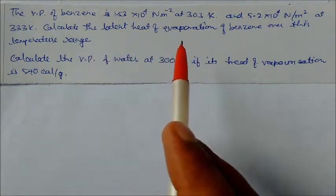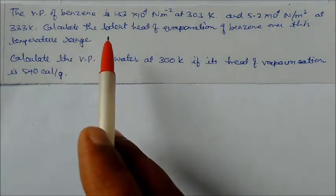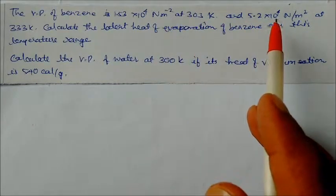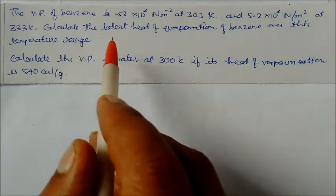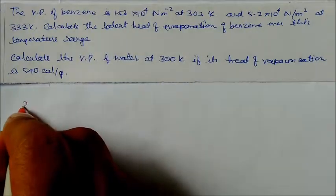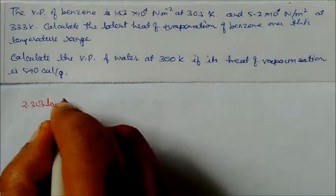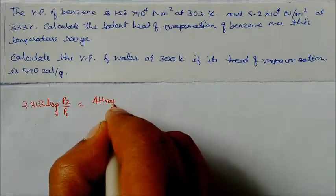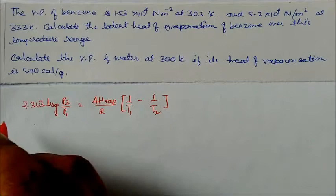Problems based on the Clausius-Clapeyron equations. The vapor pressure of benzene is 1.53×10⁴ N/m² at 303 K and 5.20×10⁴ N/m² at 333 K. Calculate the latent heat of vaporization of benzene over this temperature range. The formula is: 2.303 × log(P2/P1) = (ΔHvap / R) × (1/T1 − 1/T2).